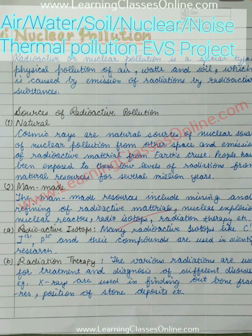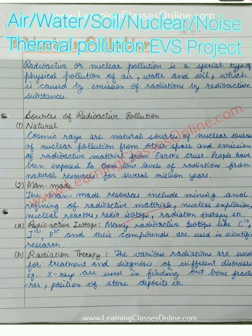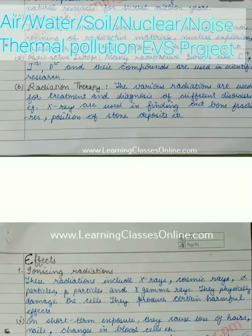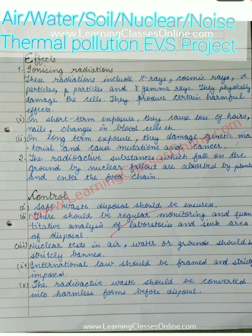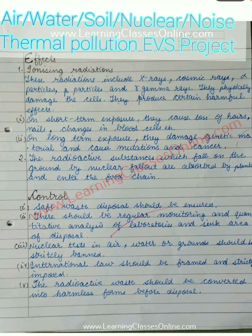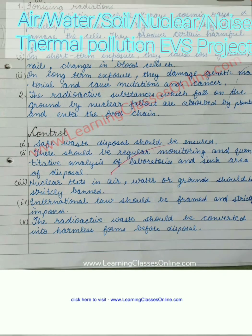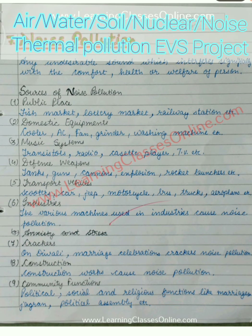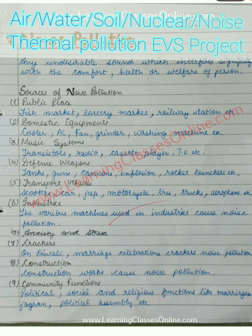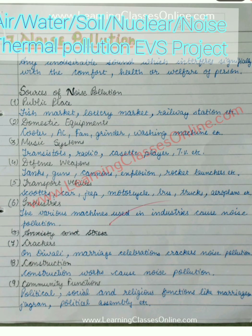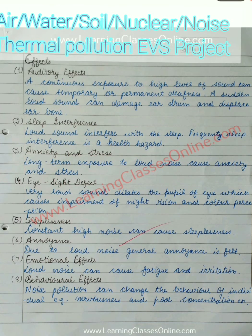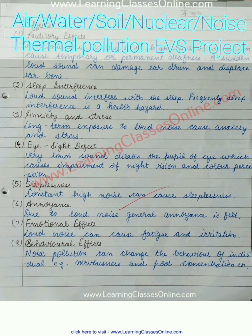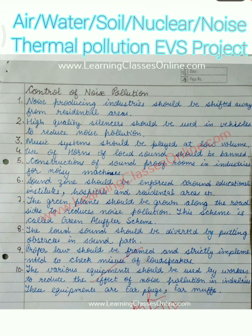Next is nuclear pollution. If you have a topic on nuclear pollution, you can use this content. There are different effects of nuclear pollution covered, and also how you can control nuclear pollution. After that we have noise pollution. If there is a separate topic based on noise pollution, you can write this — including the effects of noise pollution and how to control noise pollution.